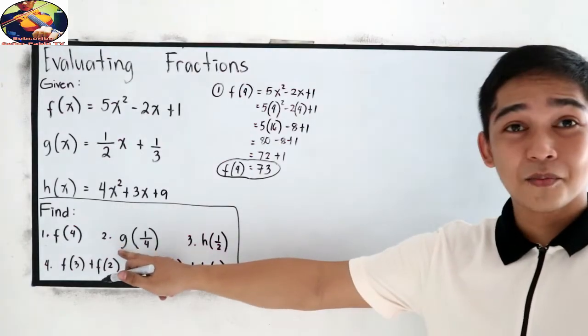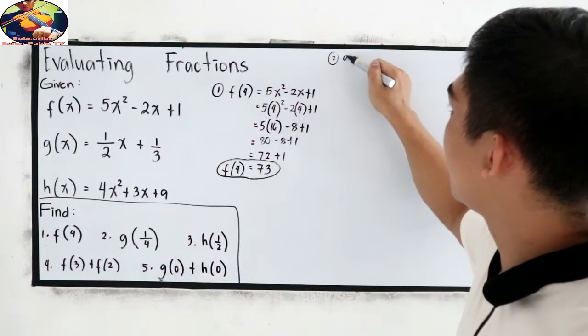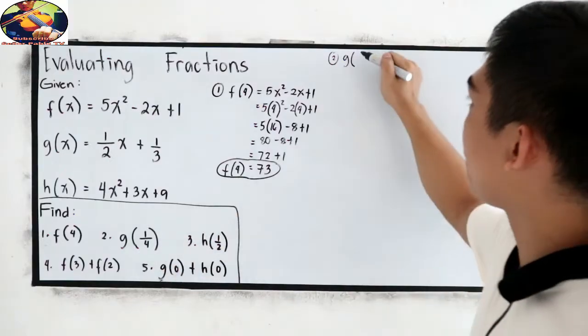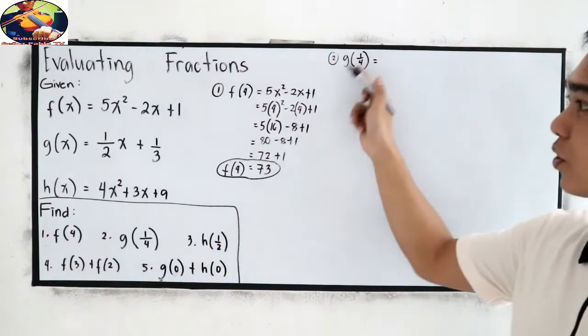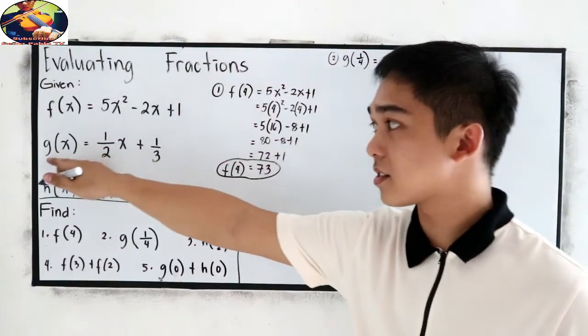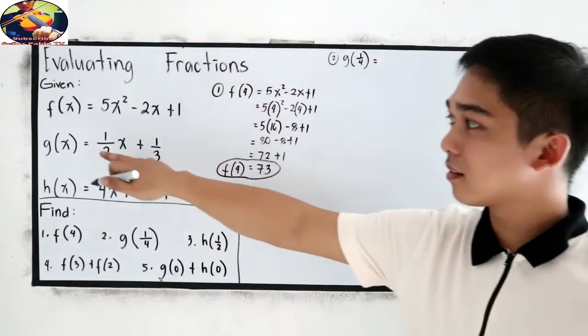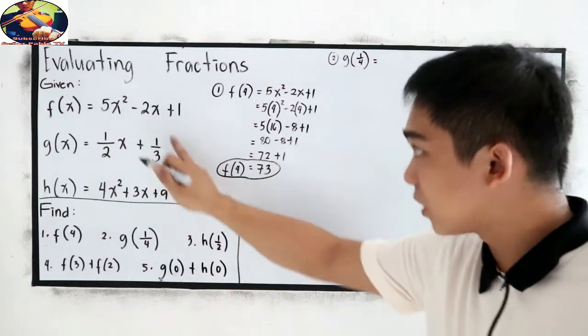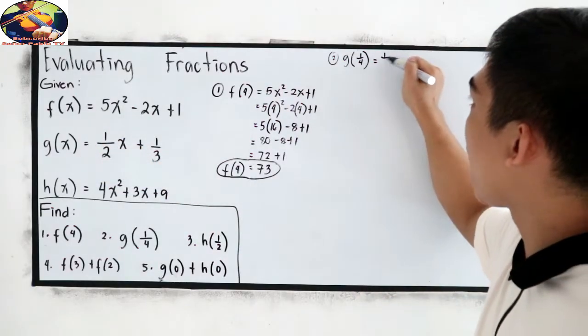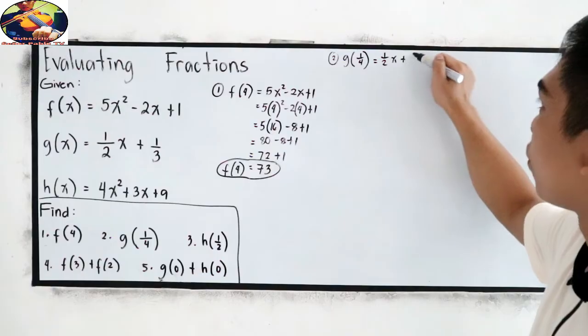Let's check number 2. g of 1 fourth. So, now we're given g of x. We're going to evaluate when x is equal to 1 fourth. Copy the expression. 1 half x plus 1 third.